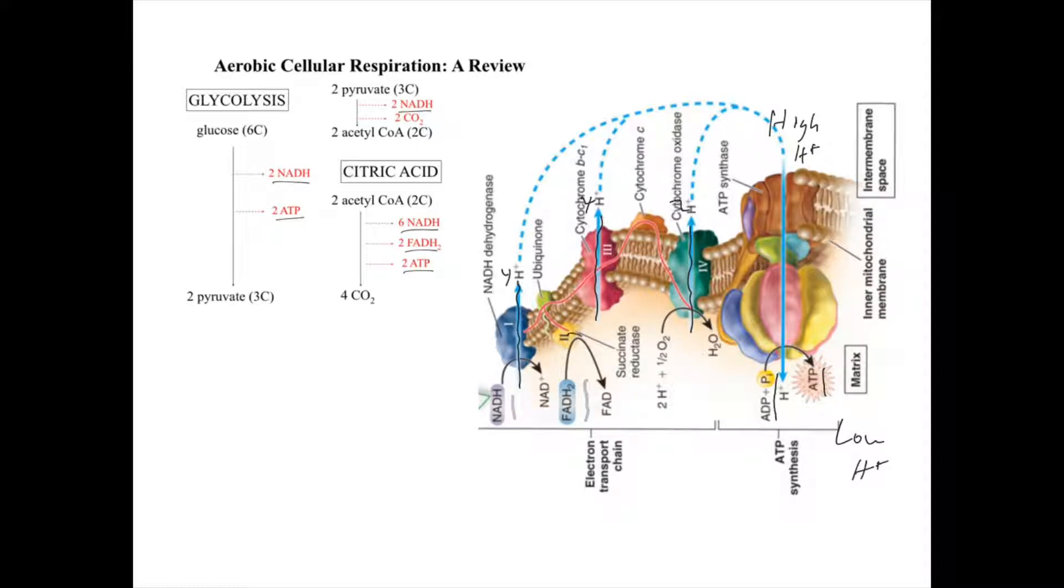FADH2, which has slightly lower energy electrons, cannot drop off its electrons at complex one, so it drops them off at complex two. Therefore, FADH2 only pumps six hydrogen ions across as those electrons move through complex three and complex four, but not complex one. With NADH pumping 10 hydrogens across and FADH2 pumping six hydrogens across, NADH makes more ATP because you create a larger part of that gradient by pumping more hydrogens, ultimately because it started with higher energy electrons.